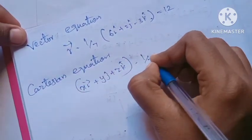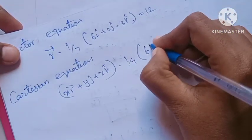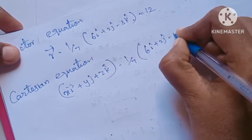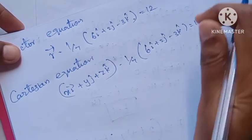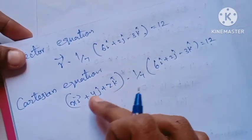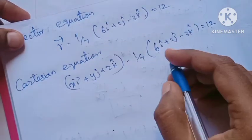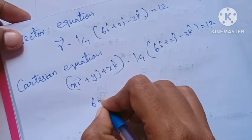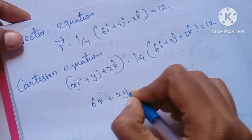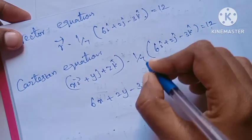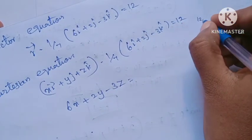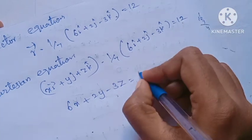(xi+yj+zk) dot 1 by 7 into (6i+2j-3k) equals 12. This gives 6x+2y-3z over 7 equals 12. Simplifying: 6x+2y-3z equals 84.